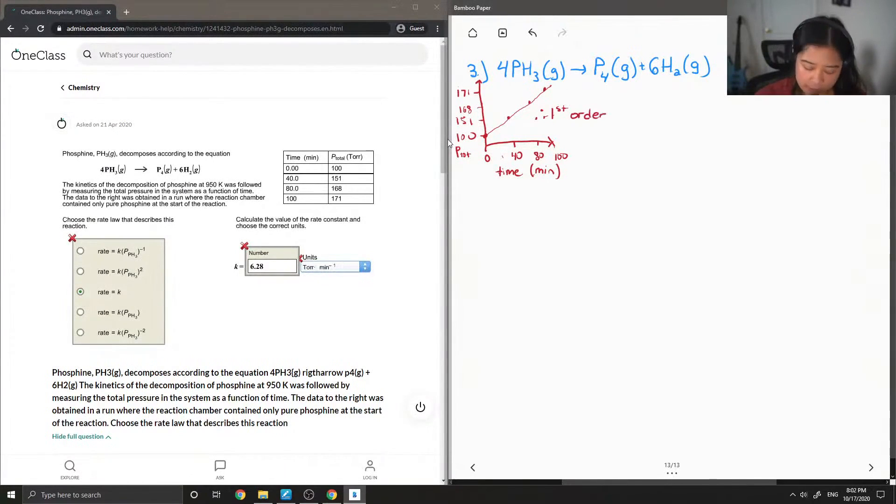If we're looking at the rate, first-order rate, so for the first one where you talk about the rate law, for first-order reaction rate it's going to be the following: where rate is equal to k times PH3.